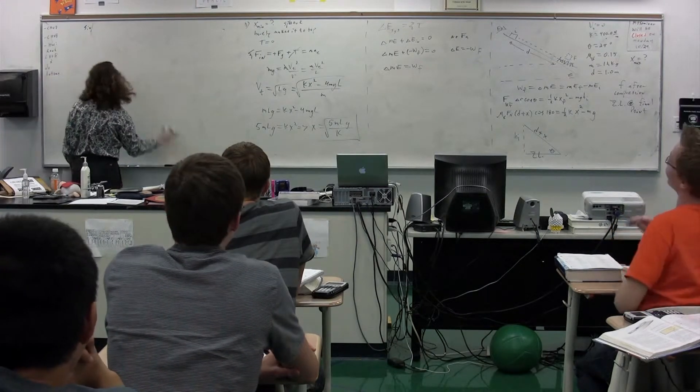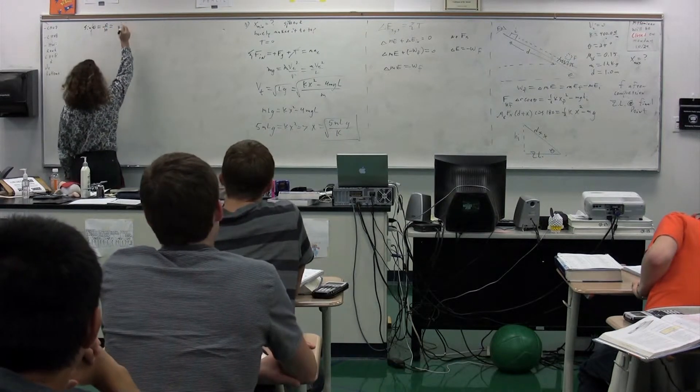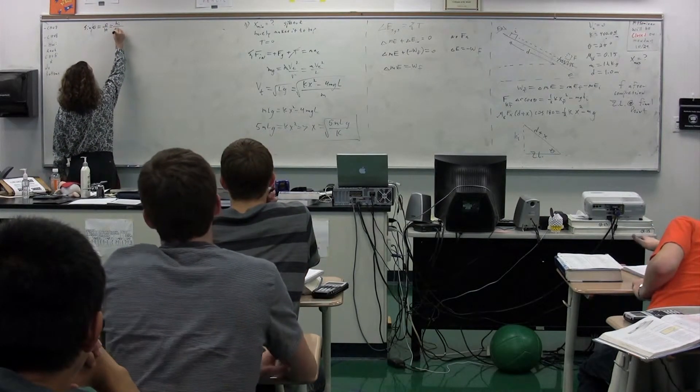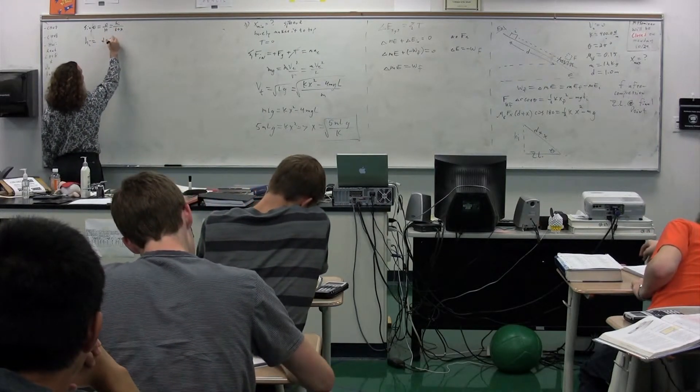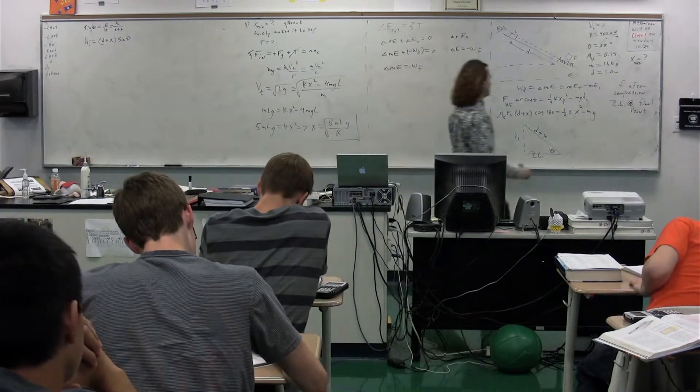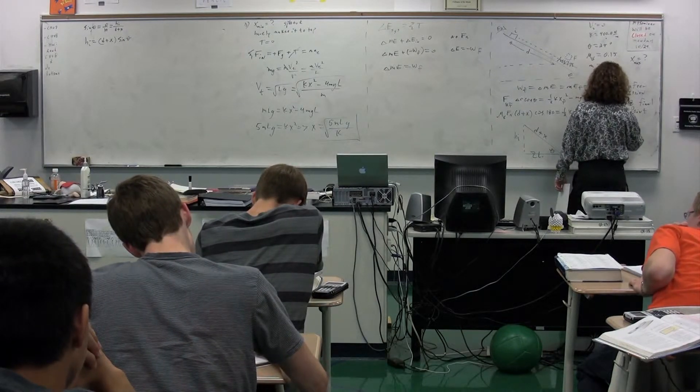The sine of theta equals opposite over hypotenuse. What is it? Opposite? Height initial. Height initial hypotenuse. D plus X. D plus X. In other words, the height initial equals D plus X times the sine of theta. So we come back here. We have D plus X times the sine of theta.